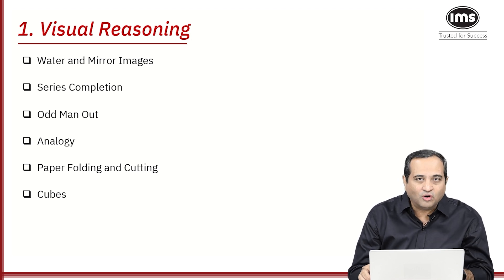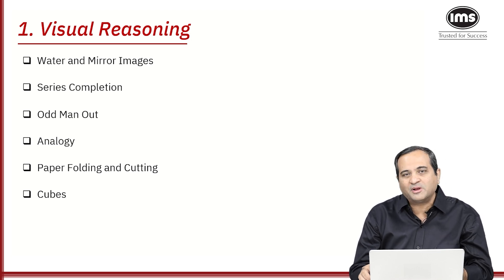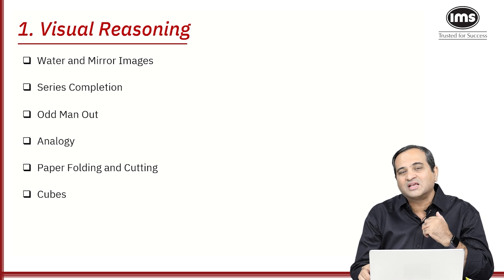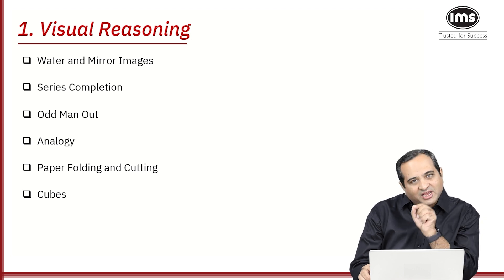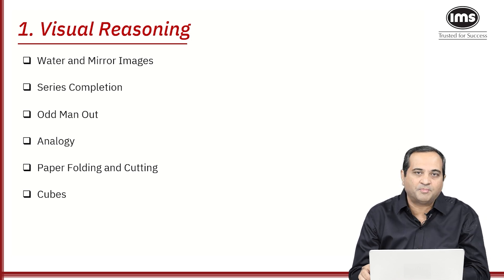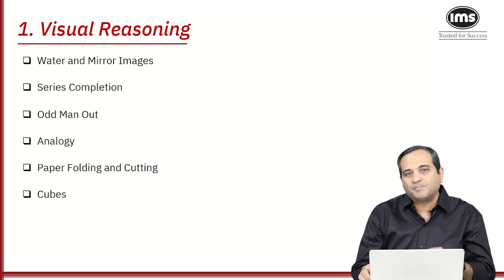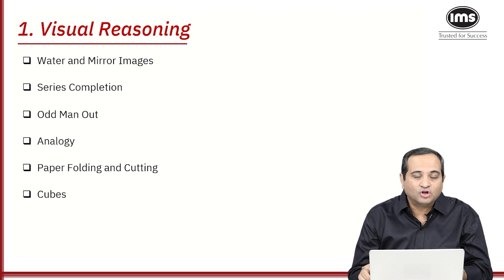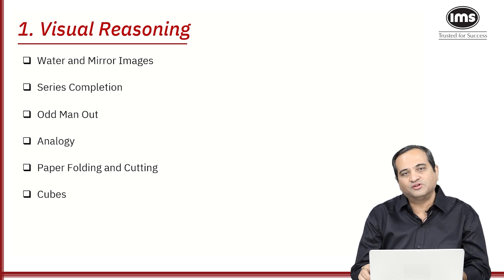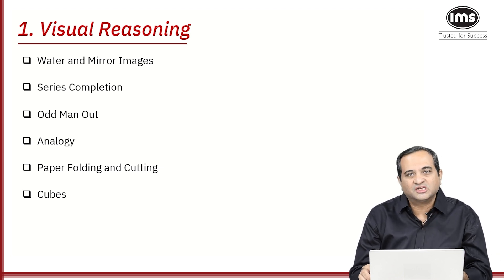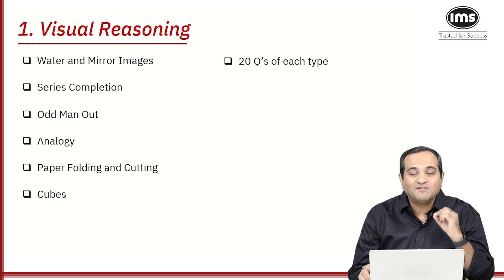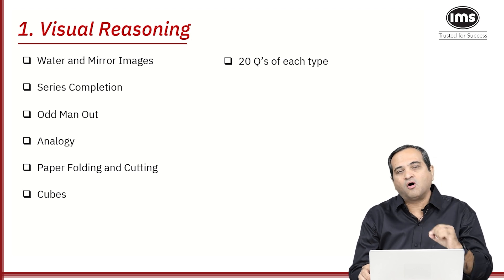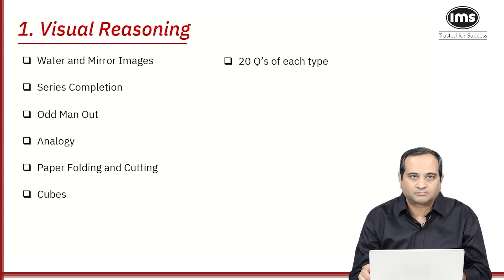You will also have paper folding questions where a paper is folded, the folding method is shown, a small cut is made in the paper, and you need to determine how it looks when opened up. These are the types of questions you get in visual reasoning. My simple suggestion is to solve a minimum of 20 questions of each type.